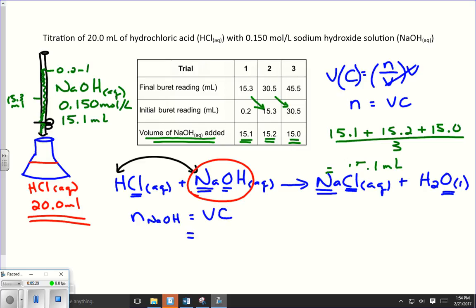The volume of sodium hydroxide, right here, 15.1 milliliters. However, I'm going to convert this into liters because the concentration is in moles per liter. So I need that to be in liters. So 15.1 milliliters, I divide it by 1,000, I get 0.0151 liters times my concentration of 0.150 moles per liter. Where my liters are going to cancel, I'll be left with moles.